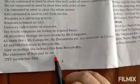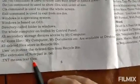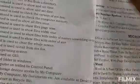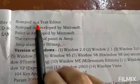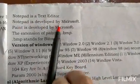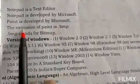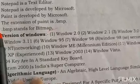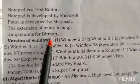The extension of Notepad is .txt, which stands for text file. Notepad is a text editor developed by Microsoft. Paint is also developed by Microsoft. The extension of Paint is .bmp, which stands for Bitmap.